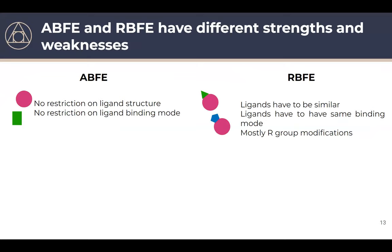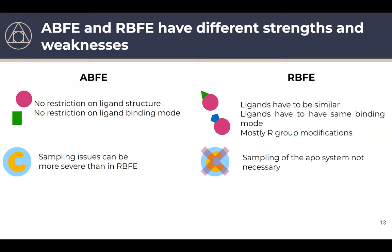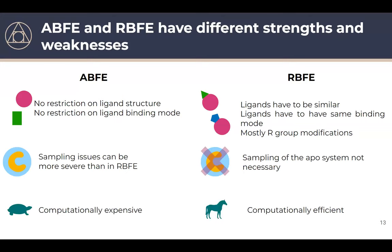To summarize: absolute calculations have the benefit that we're not restricted on ligand scaffold or structure, while relative approaches are typically limited to ligands with the same scaffold. On the other hand, absolute calculations require sampling the apo protein state, which can cause severe sampling problems. In the relative approach, one of the two ligands is always in the binding site, so we never have to sample the unbound protein state — that's why the relative approach can be more computationally efficient.